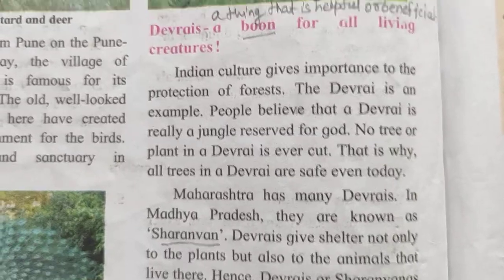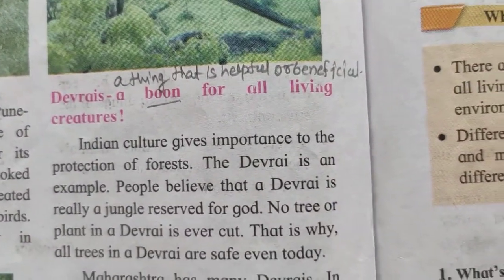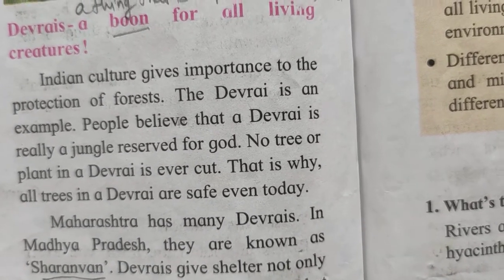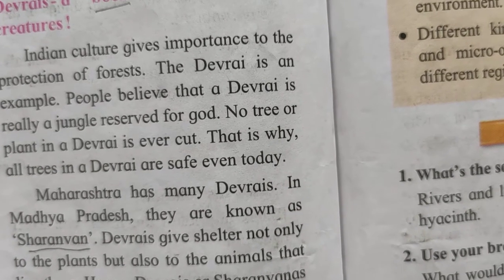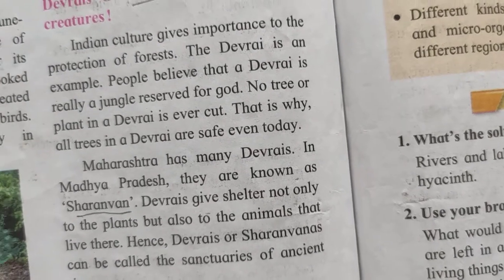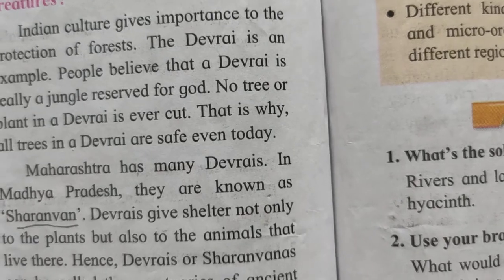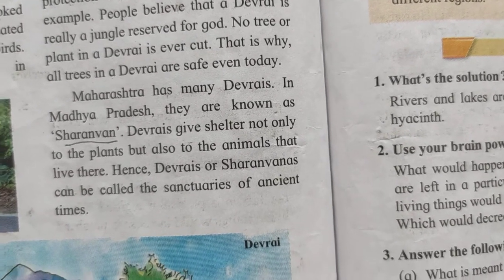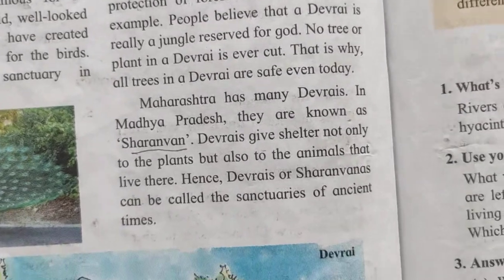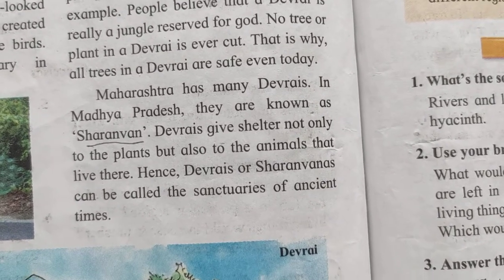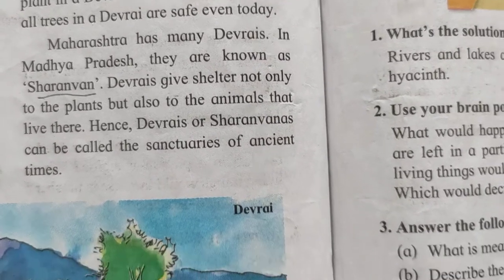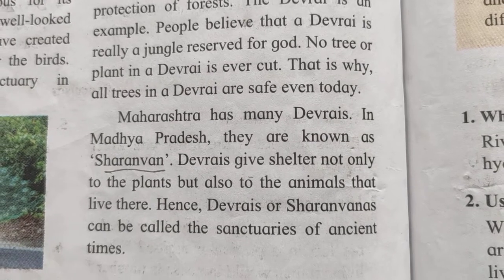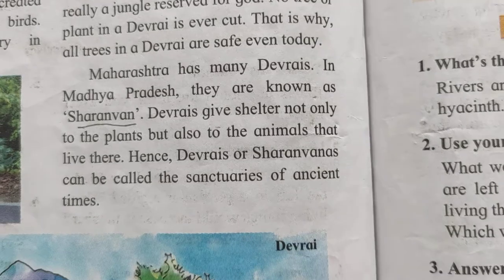From ancient times, there is a concept of Devarayis in Indian culture. Some part of the jungle is protected and called Devarayis. People believe that the Devarayi is a real jungle reserved for God, and no trees or plants in the Devarayi are ever cut. In this way, ancient people protected plants and animals through the concept of Devarayis. These are also found in Maharashtra today, and are called Sharana vana in Madhya Pradesh. Devarayis give shelter not only to plants but also to animals, and can be considered sanctuaries from ancient times.